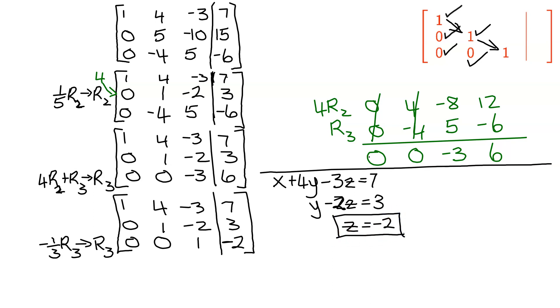Well, I found z. Back substitution says take that value and put it in the equation above it, which is y minus 2 times z, which is negative 2, equals 3. So y, negative 2 times negative 2 is positive 4, equals 3. Subtract 4 from both sides. I get y equals 3 minus 4 is negative 1.